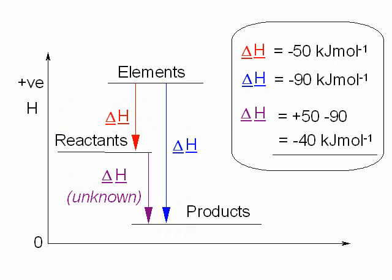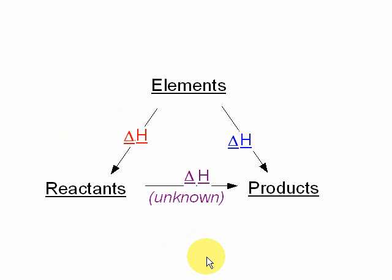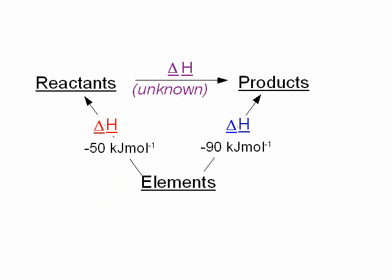There's a sort of simpler model of Hess's Law, which looks something like this, where we've got rid of the axes here, but really things are the same. We're going from elements to the reactants, or from elements to the products. Now commonly this is actually drawn the other way up, this way round. So now we have elements at the bottom.